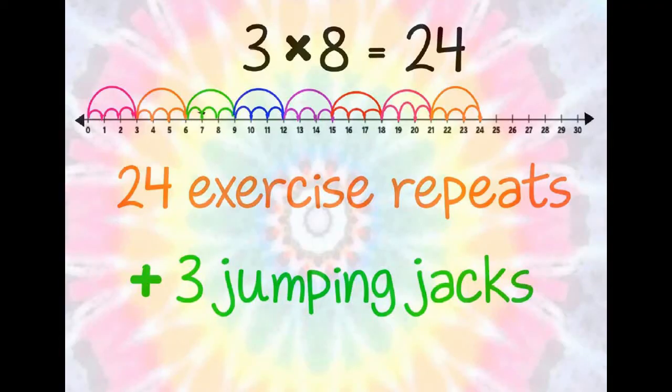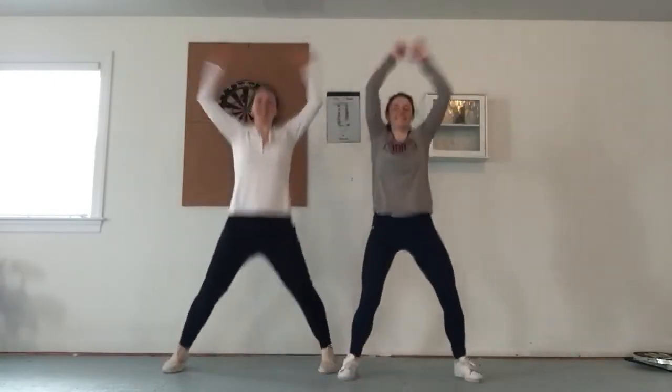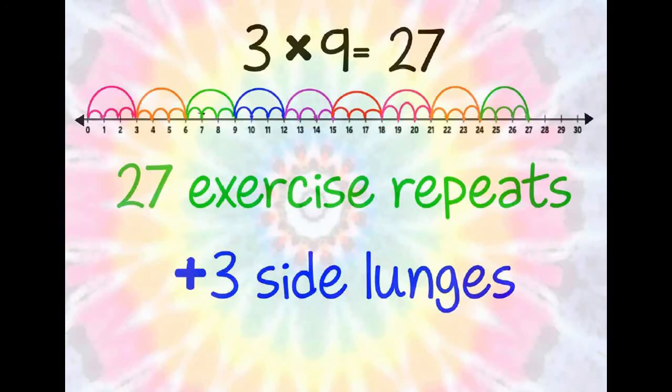3 times 8 is 24. We have completed 24 exercise repeats. Now we will add 3 jumping jacks. 3 times 9 is 27.